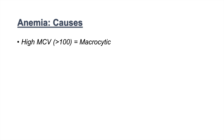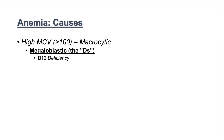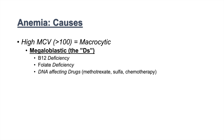At the other extreme, when we have high mean corpuscular volumes — defined as greater than 100 — this is macrocytic. Anemia with high MCV is macrocytic anemia. In macrocytic anemia, you've got to think about megaloblastic and non-megaloblastic. If it's megaloblastic, think about the Ds: B12 deficiency, folate deficiency, and DNA-affecting drugs, which include methotrexate, sulfa, and other chemotherapies.